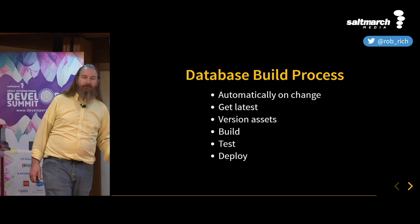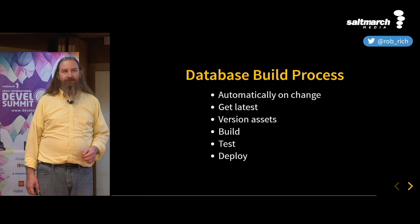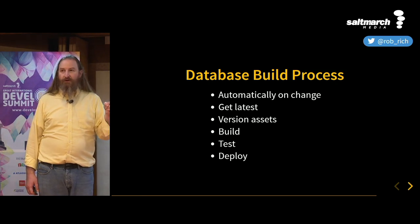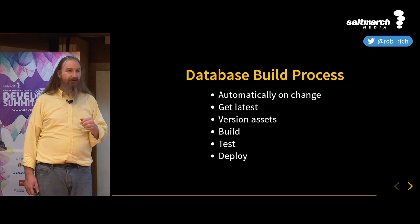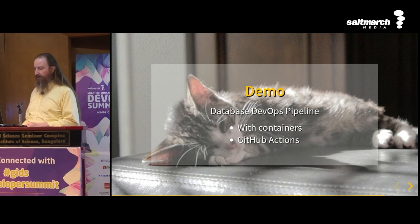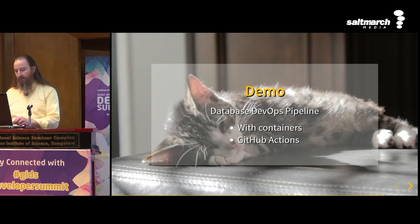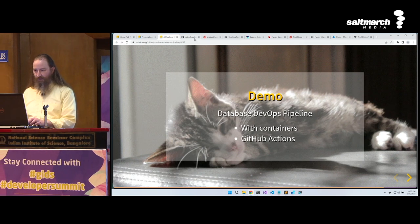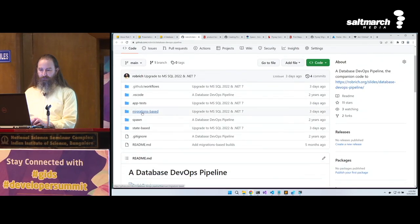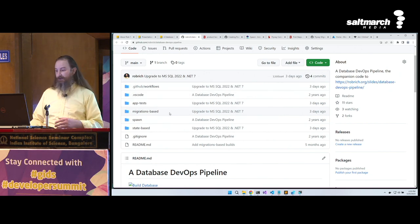No matter what we pick, we're back to this build process — state-based or migrations-based. On every change: get the latest, write the version somewhere, build, test, all in a neutral environment, if that works, deploy. That's our build process for applications and also our build process for databases. We're going to do a database build process with containers for state-based, also for migrations-based, locally, and in the cloud. You can grab that code today to dig into all of these things.